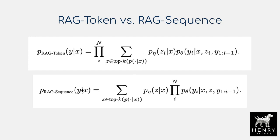The RAG-sequence model takes one latent document and generates the entire sequence Y_1 to Y_N, and then does that for each of the Z documents, multiplying together the probabilities of those entire sequences.